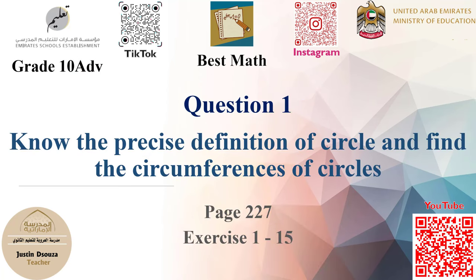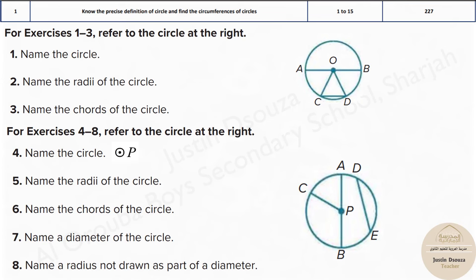Question 1 is to know the precise definitions of circles and to find the radius, diameter, and circumference. Here we have been told to refer to the circle, and from questions 4 to 8, the circle. We need to tell a few basic details of them.